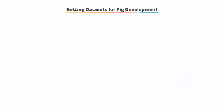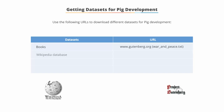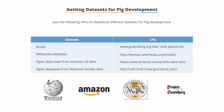Getting data sets for Pig development. You can use the following URLs to download different data sets for Pig development. Books can be found at Gutenberg.org. For a Wikipedia database, go to dumps.wikipedia.wikimedia.org/enwiki. For open databases from S3 data, visit aws.amazon.com/public-datasets. And for national climate data, go to cdo.ncdc.noaa.gov/qclcd_ASCII.